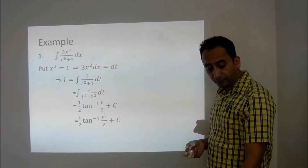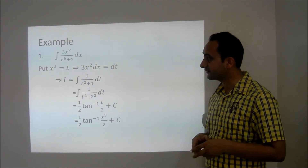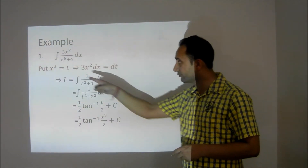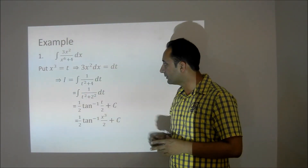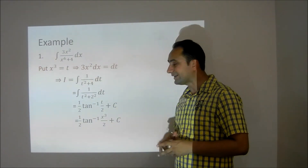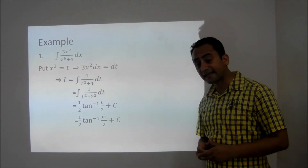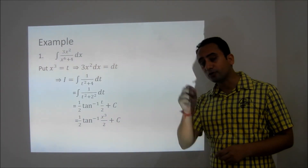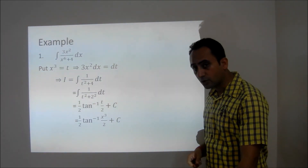Let us take a few examples. The first example: find the integral of 3x squared upon x to the sixth plus 4 dx. If we substitute x cube equals t, then differentiating both sides gives 3x squared dx equals dt. The integral becomes integral of 1 upon t squared plus 4 dt, which matches the formula 1 upon a tan inverse t upon a with a equals 2. So the result is 1 upon 2 tan inverse t upon 2 plus c, and substituting back t equals x cube gives the answer: half tan inverse x cube upon 2, plus constant.